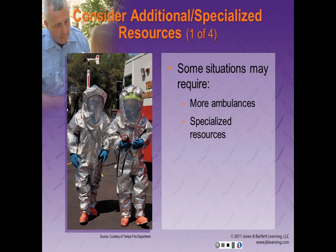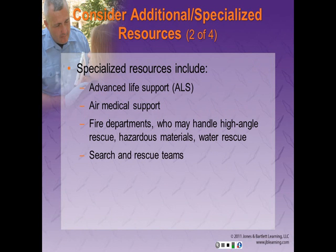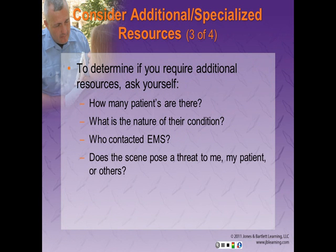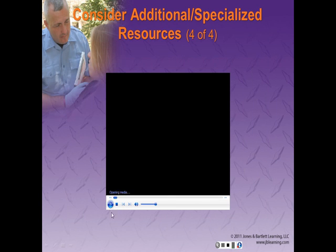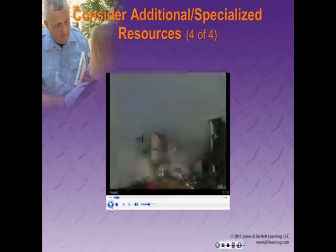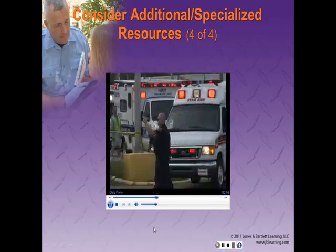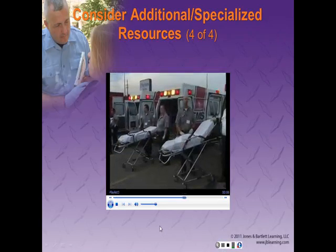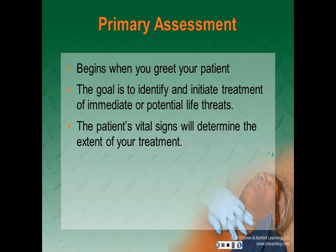You need to consider additional or specialized resources. Some situations may require more ambulances or specialized resources including advanced life support, air medical support, fire departments for high-angle rescue, hazardous materials management, complex extrications from motor vehicle crashes, and water rescue or search and rescue teams. To determine if additional resources are required, ask yourself: How many patients do I have? What is the nature of the patient's condition? Who called for EMS assistance, and does the scene pose a threat to me, my patient, or others? Request additional resources if the number of patients exceeds your capabilities.